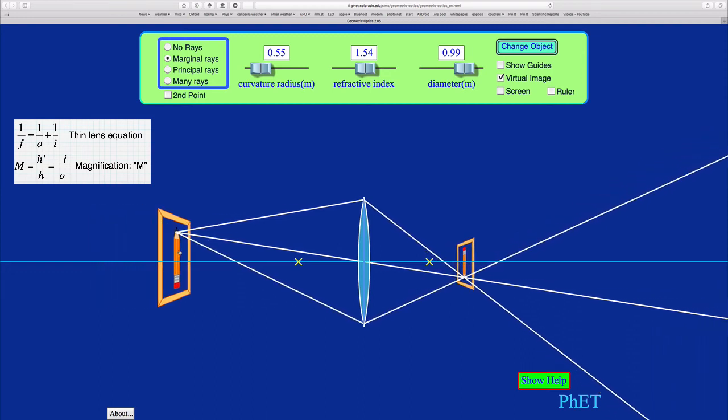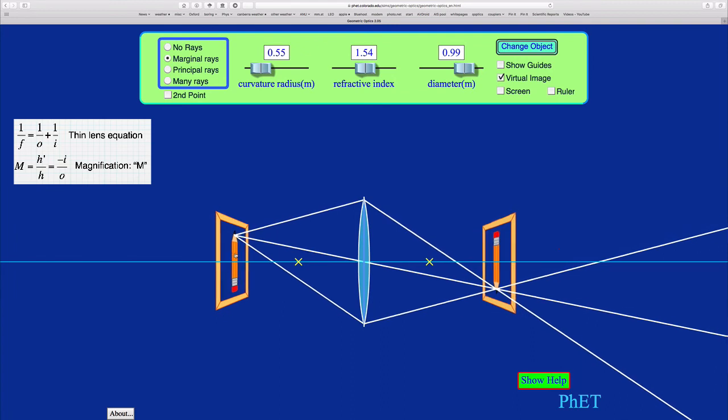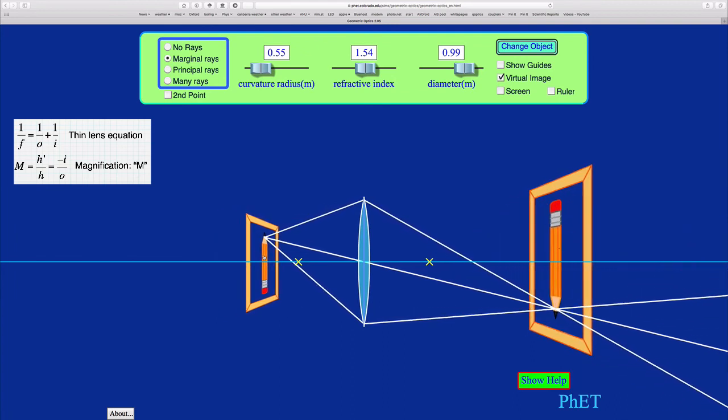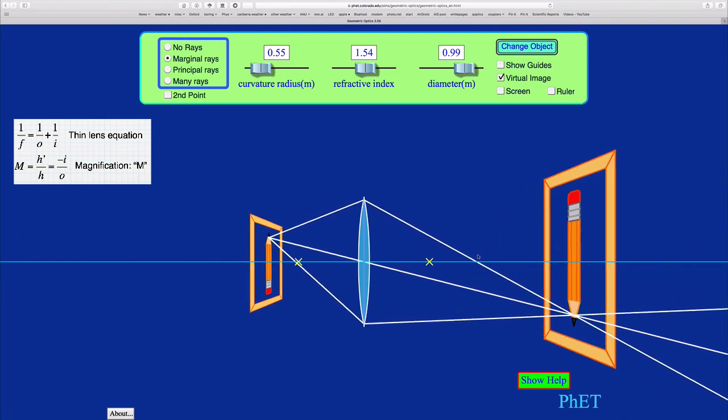As I move the object closer and closer to the focal point here, now we get a magnification that has magnitude greater than 1. The sign is still negative because the image is on the other side of the lens, and it's upside down, so it's inverting.